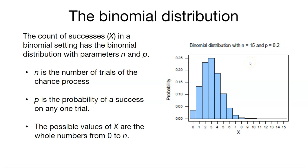All of the possible values of X are the whole numbers from 0 to N. We need to have some whole number. We can't have any values with decimals—that would make it a continuous distribution. But the binomial, remember, is a discrete distribution.